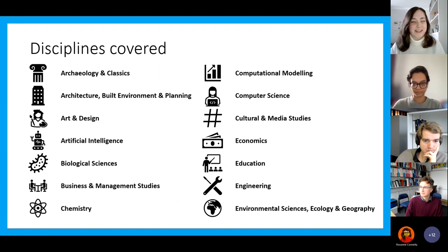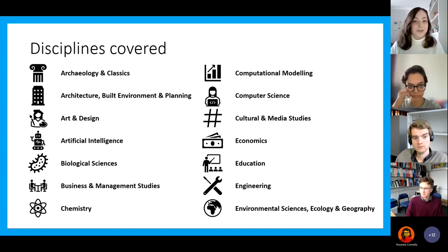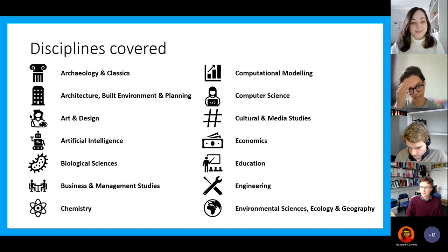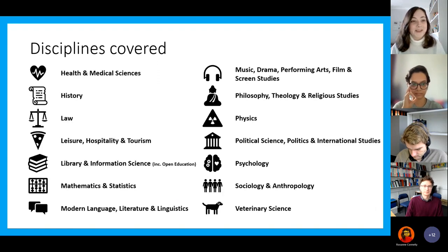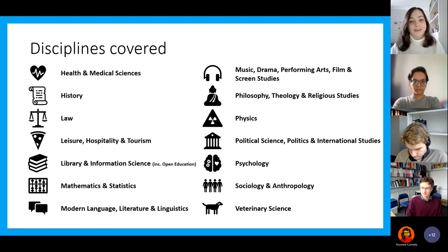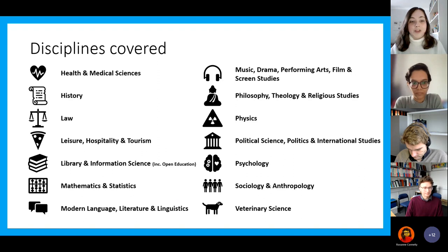There are 28 different disciplines in total. You can see that we're covering archaeology and classics, artificial intelligence, chemistry, computer science, economics, and engineering. We've also got health sciences, history, law, leisure and tourism, math, physics, psychology, and battery science. There are a lot of different things that have been considered and looked into, which I think is really, really useful, and hopefully something that covers something interesting to everyone attending this talk.